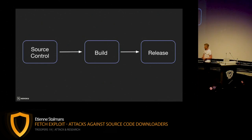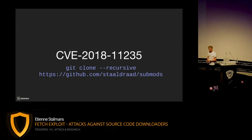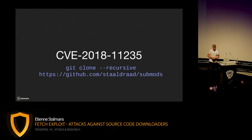Last year, looking into git and how it works, I came across CVE-2018-11235. It allows you to get code execution during the git clone process. There is one prerequisite: you need to clone your repositories with the recursive flag, or clone them and then initialize submodules afterwards — when the submodules initialize, the vulnerability triggers as well.